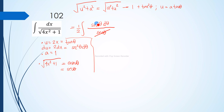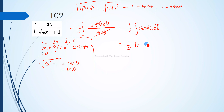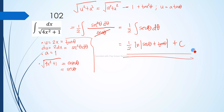We cancel one secant theta in the denominator with one in the numerator, leaving one half times the integral of secant theta d theta. We know that the integral of secant theta is the natural logarithm of the absolute value of secant theta plus tangent theta plus C. So the general solution is one half times the natural logarithm of secant theta plus tangent theta plus C. Now we need to revert back to the original variable.